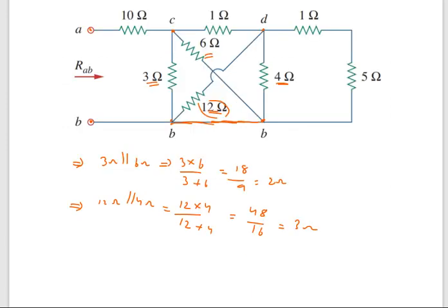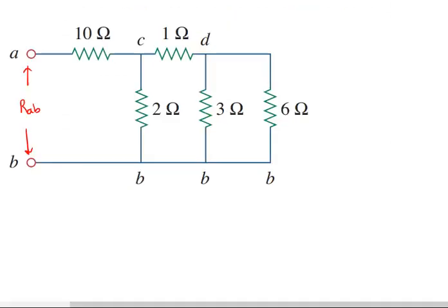So between nodes C and B the equivalent resistance is two ohms, and between nodes D and B the equivalent resistance is three ohms. Also between D and B, one ohm and five ohms are connected in series — whatever current flows through one flows through the other — so the equivalent resistance between those two terminals is one ohm plus five ohm, which is six ohms.